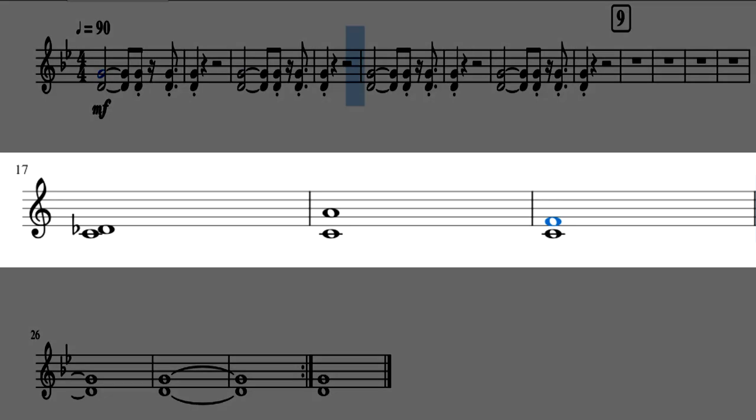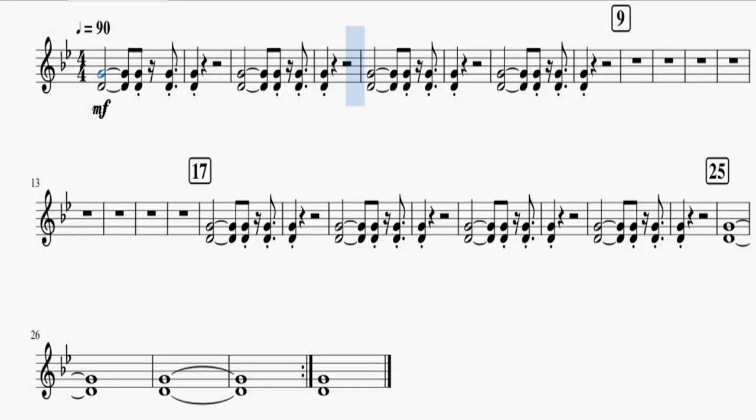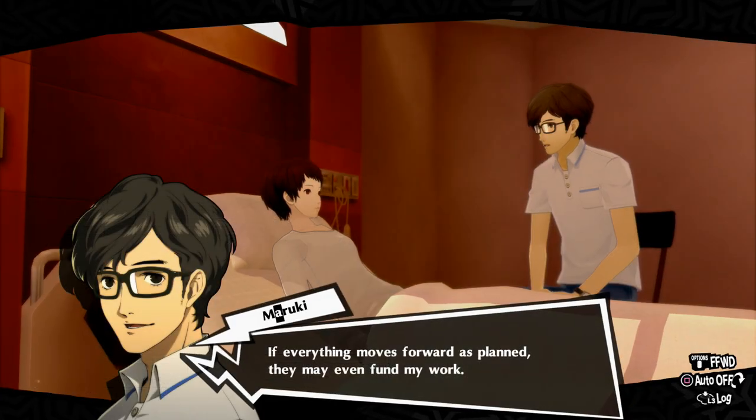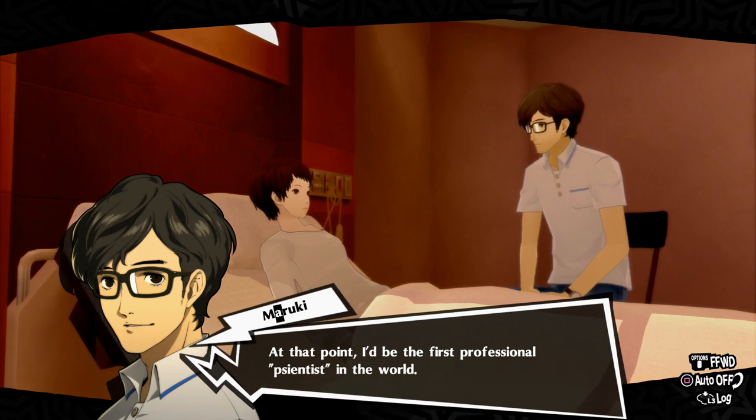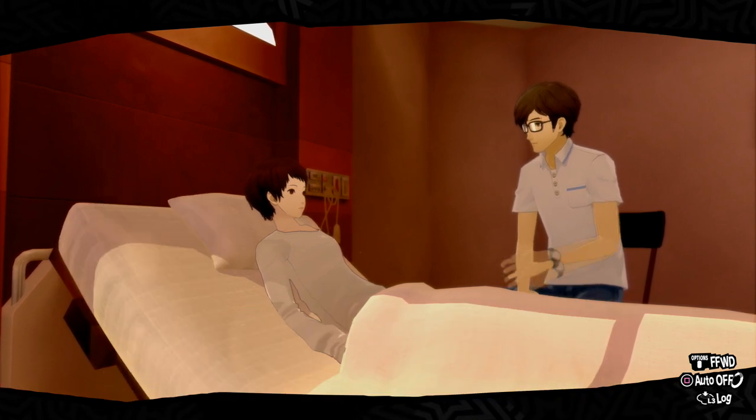So a minor second interval would be the Jaws theme, a major sixth would be the NBC theme, and the perfect fourth would be Here Comes the Bride. Now, this again might just be an overanalyzation of an interval found in a secret palace for an RPG, but as I was saying before, Dr. Maruki had a girlfriend named Rumi.